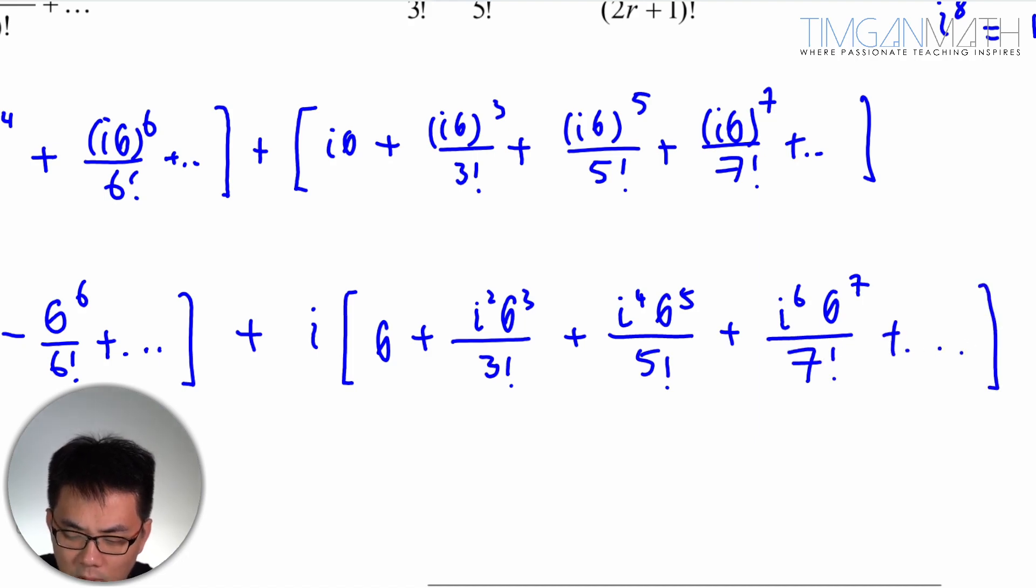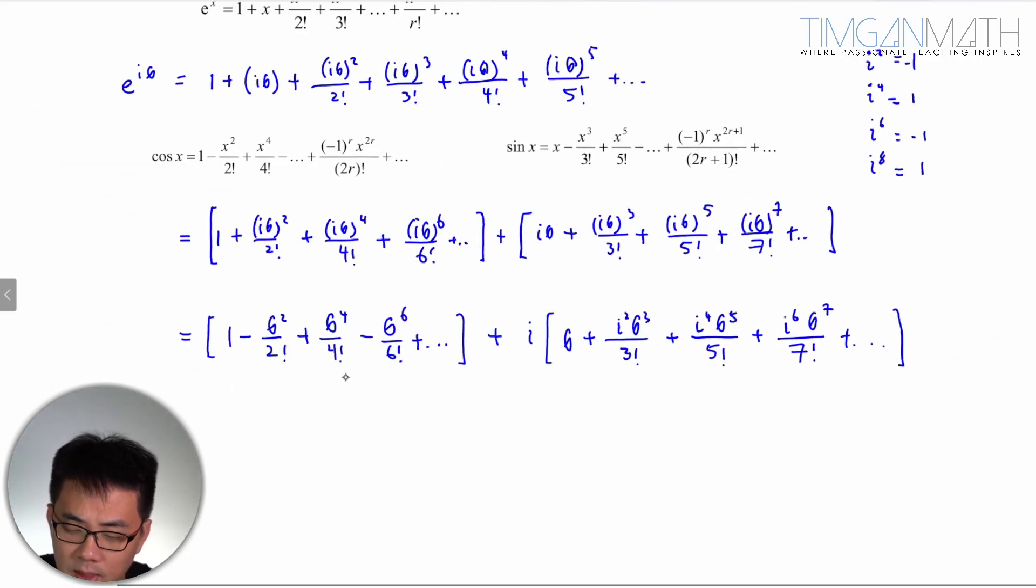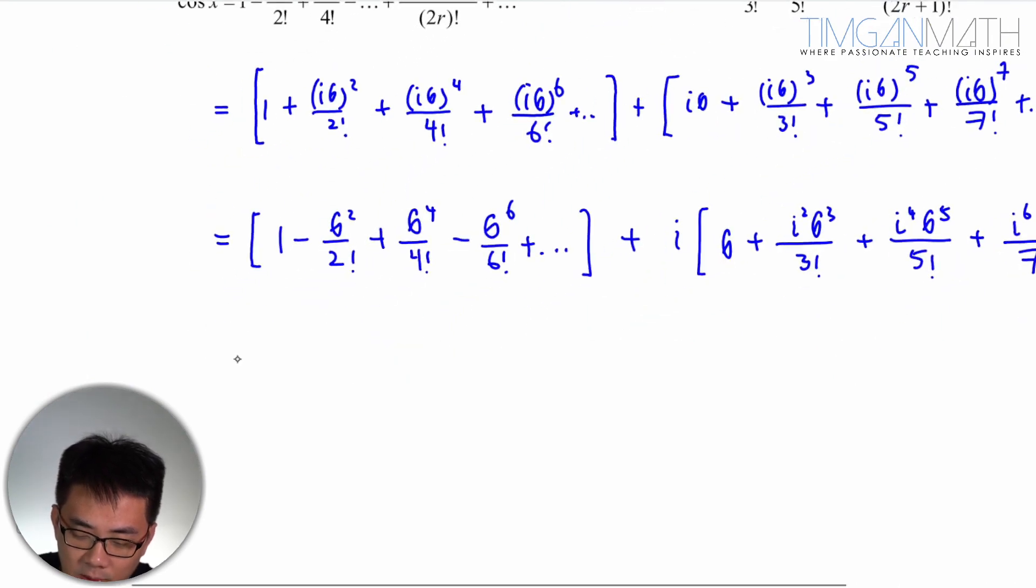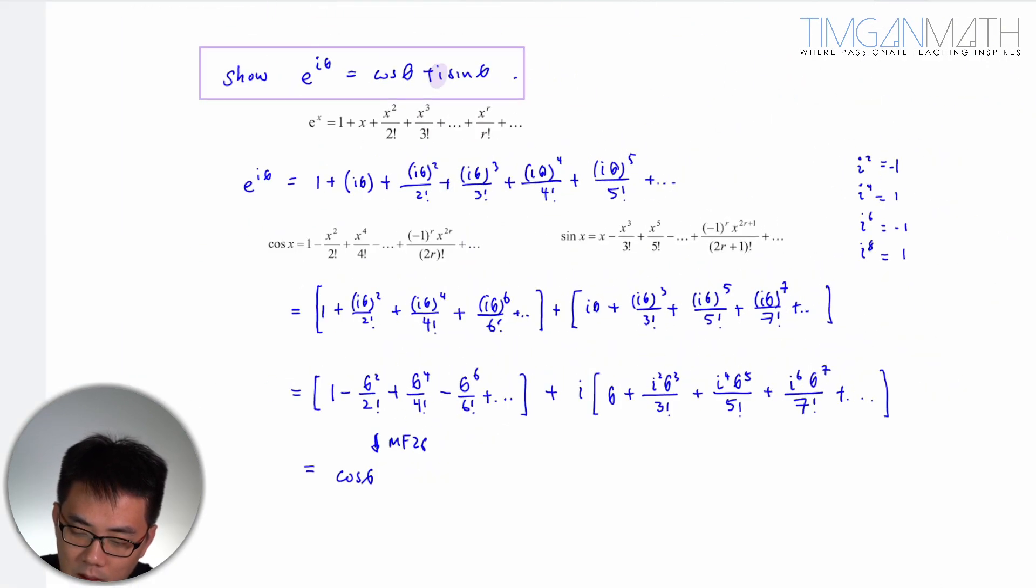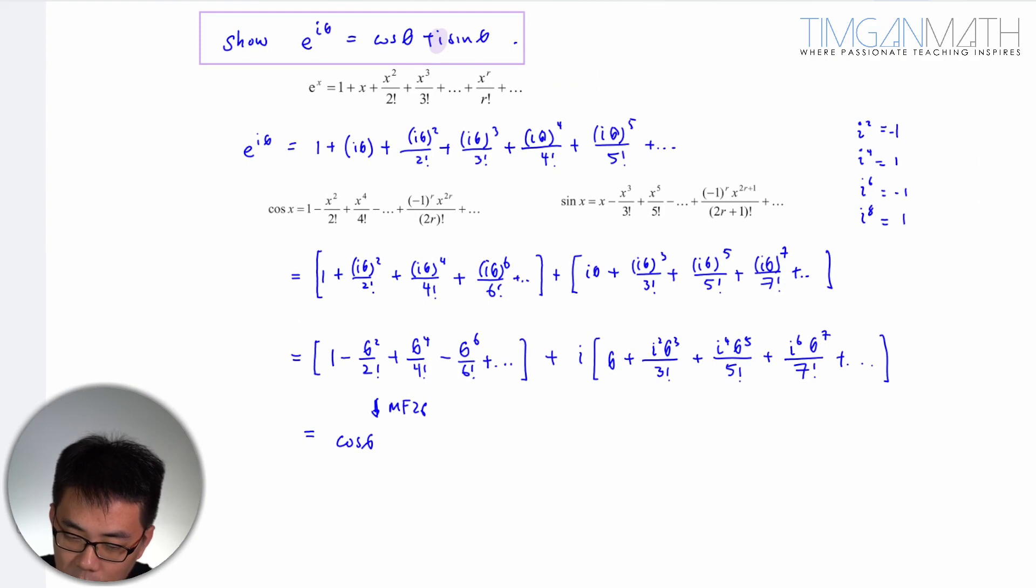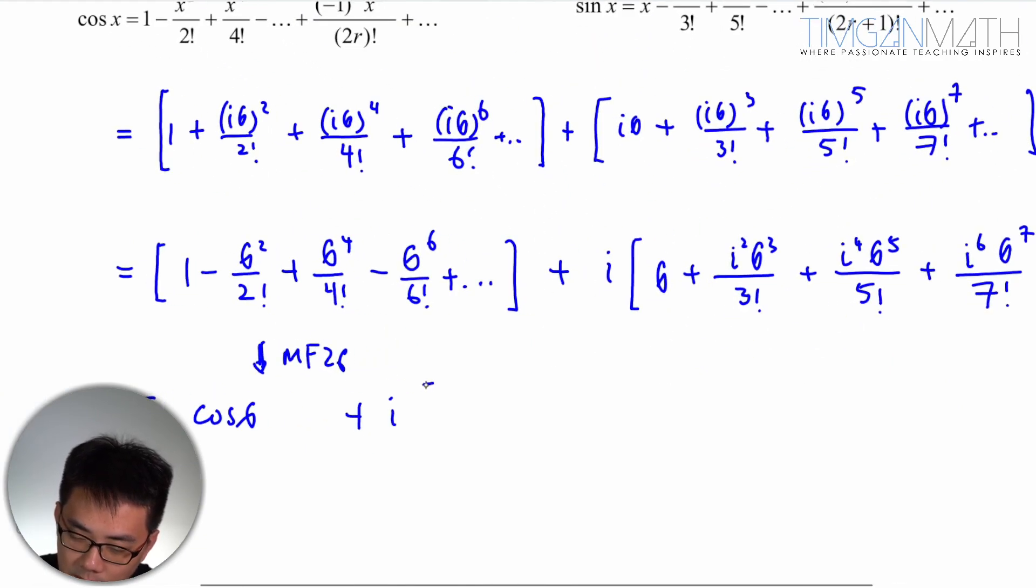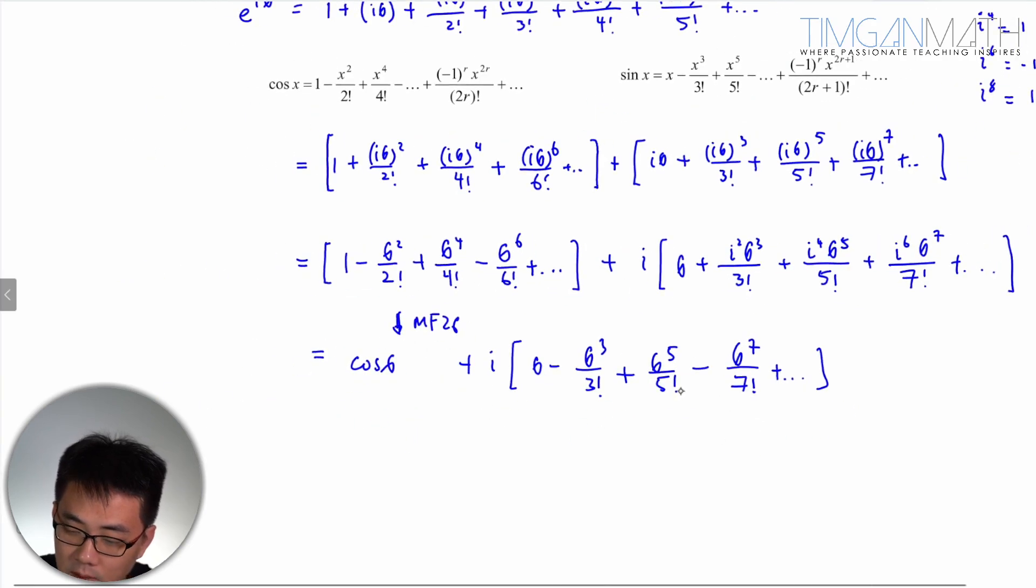So this is straight off cosine θ from MF26. This is just cosine θ here. Then this two here is also MF26, and this is plus i times sine θ. Similarly, this one here is actually your sine, so this side here is sine θ.